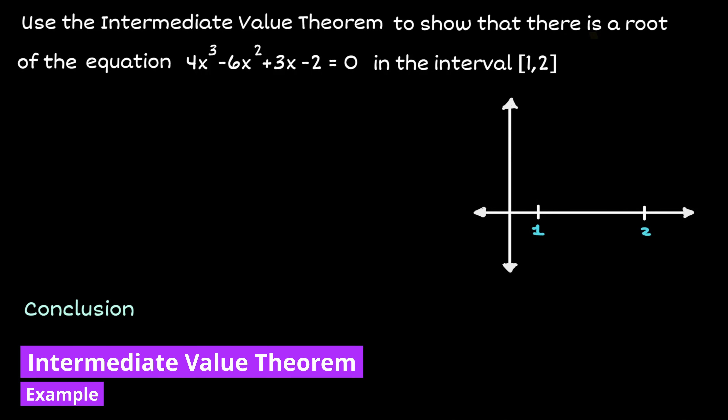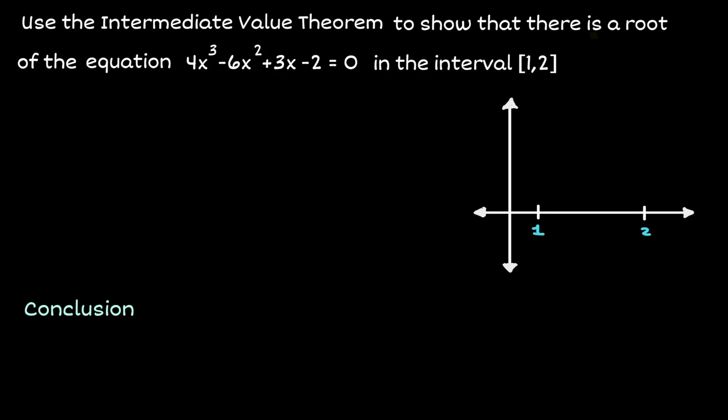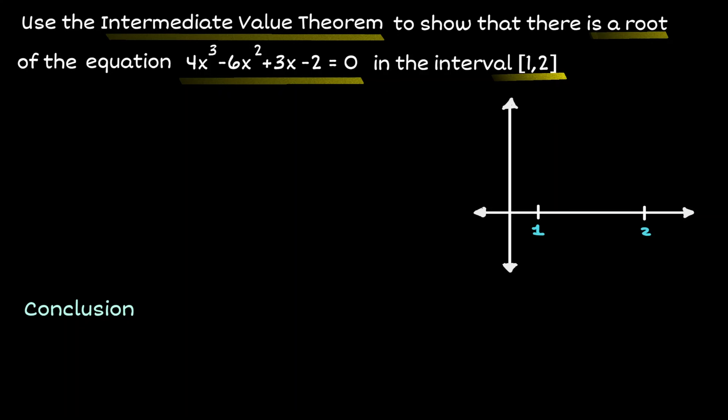Welcome. Let's take a look at some examples where we can use the intermediate value theorem. We are given the polynomial x to the third minus 6x squared plus 3x minus 2, and what we would like to do is use the intermediate value theorem to show that there is a root in the interval from 1 to 2.